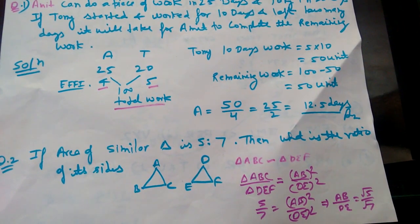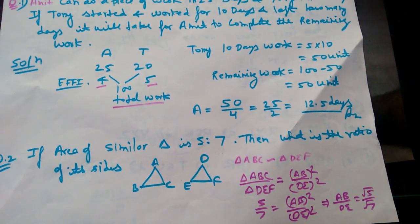Who should do the remaining? Amit. 50 by 4 is 25 by 2. It is 12.5 days.